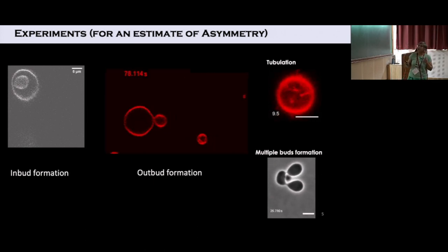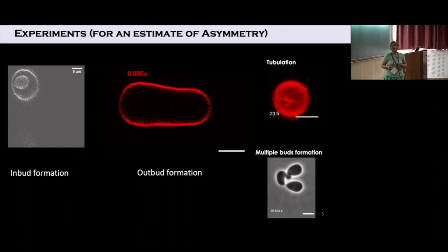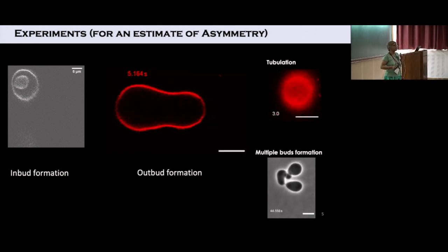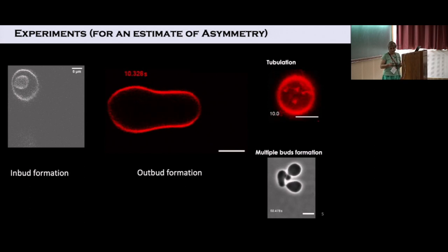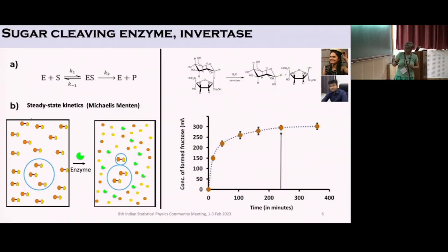The question is how do I quantify this asymmetry that I'm creating? I want to control it and how do I quantify it? What is the physical parameter to quantify it?